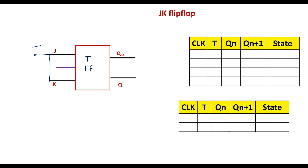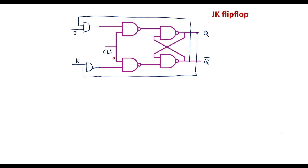It has two outputs: Q and Q bar. Let me draw the circuit diagram. We have a clock signal connected to a JK flip-flop. If I short the J and K terminals together, this combined input has only one input, represented as T. This is the circuit diagram for the T flip-flop.